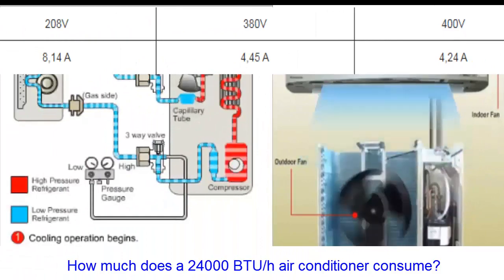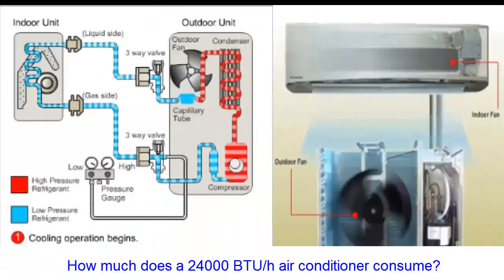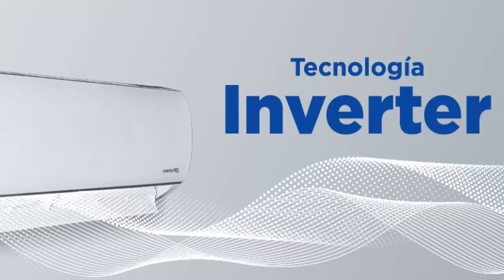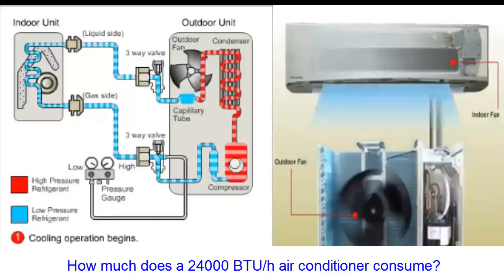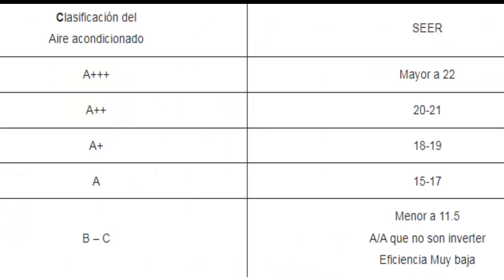When we talk about an inverter type air conditioner, once the required room temperature is reached, the equipment's compressor has the capability to reduce the motor's revolutions without shutting off. During the period when the motor rotates more slowly, the compressor's current consumption is lower.